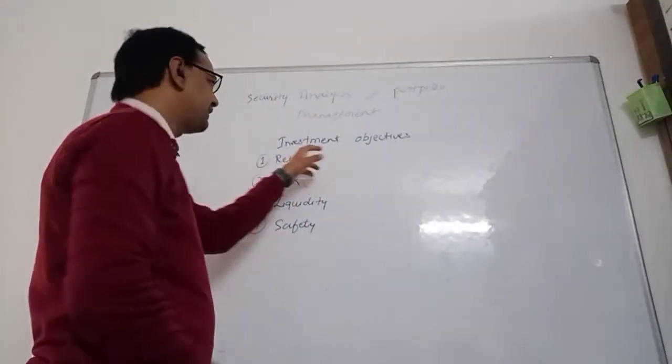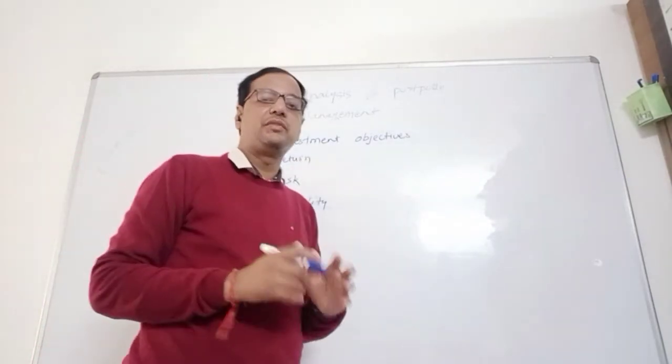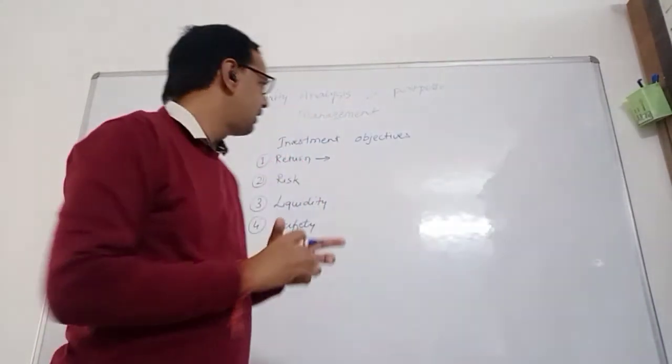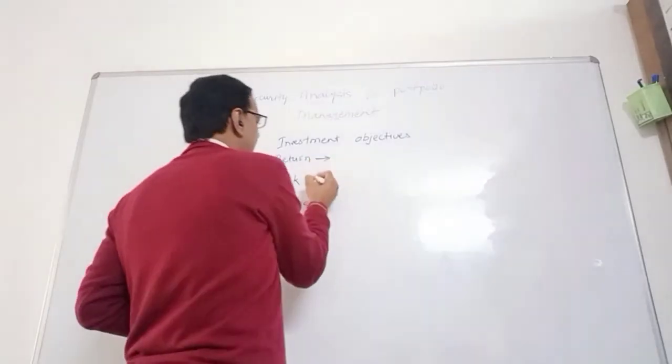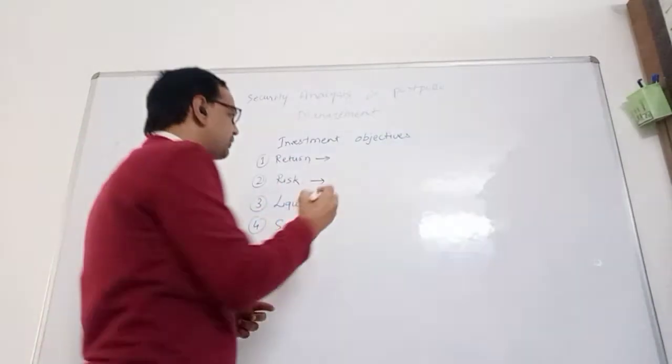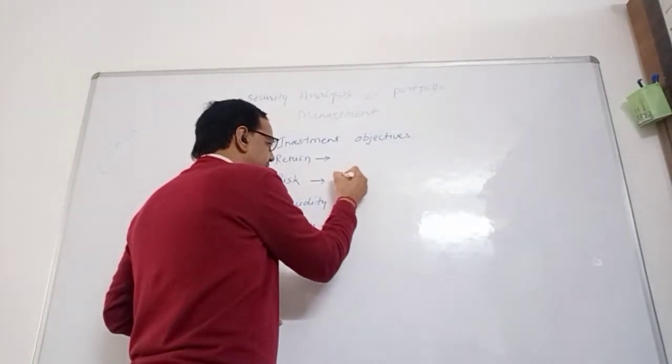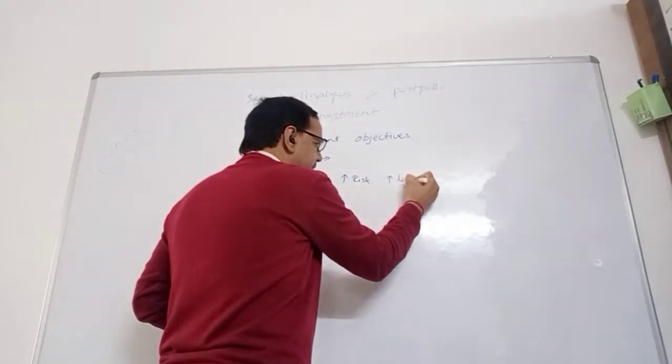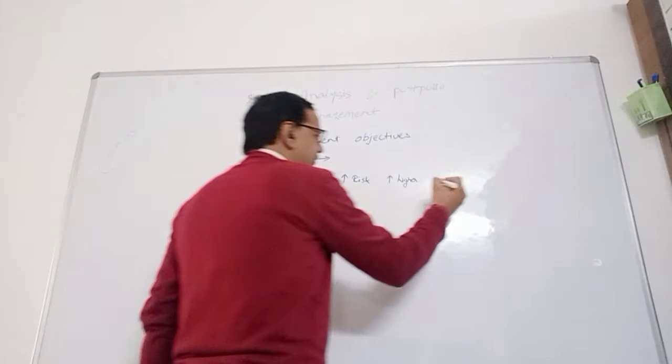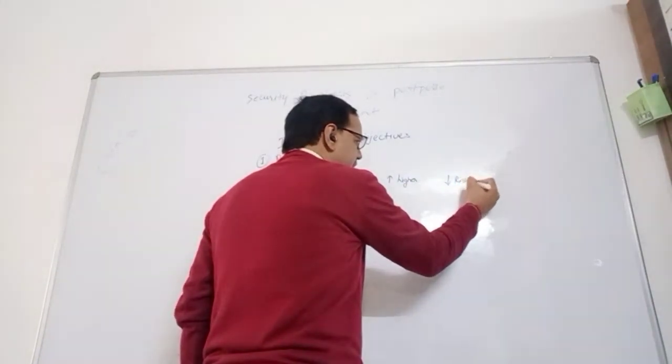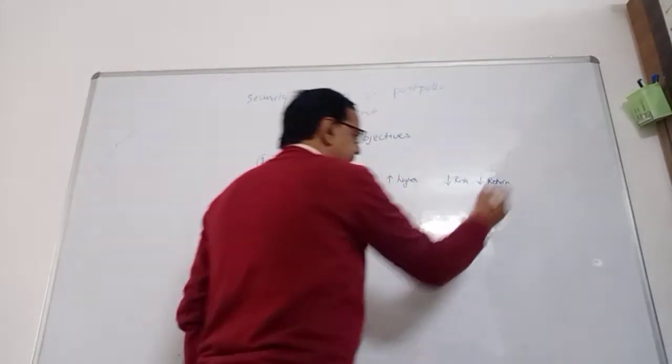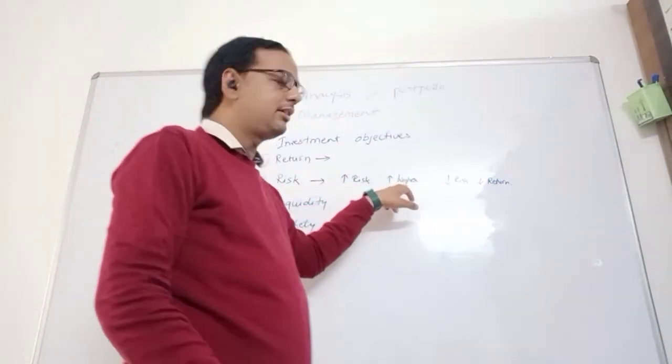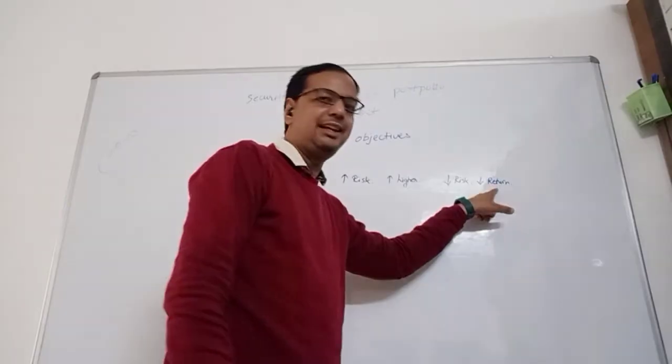Our next topic is investment objectives. What are the investment objectives for an investor? First of all, return. How much return do you have earned after investment in securities? Risk. When you invest in shares, you have higher risk, but return also higher. But if you have invested in lower risk, you have earned lower return. Like shares, if you are invested in shares, you will earn higher return. If the risk is less, the return also less, like FD.